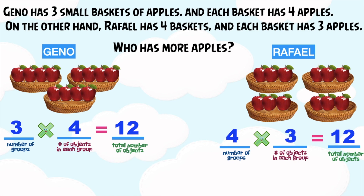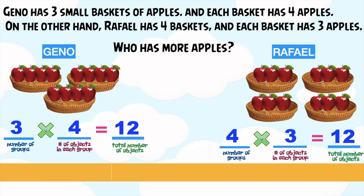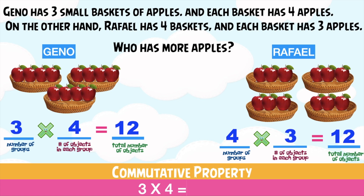Both give an answer of 12. This fact illustrates the commutative property of multiplication. This property states that the order of the factors does not affect the product. So 3 times 4 is equal to 4 times 3. This is the commutative property of multiplication.